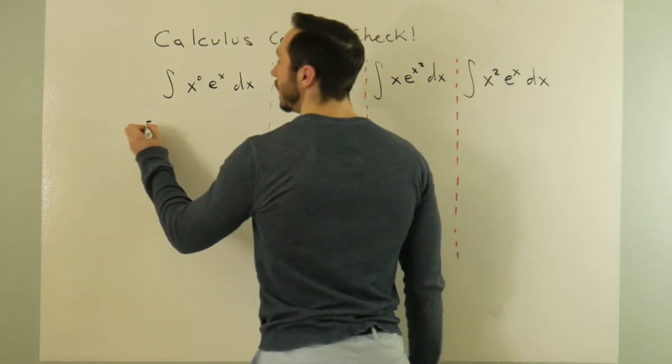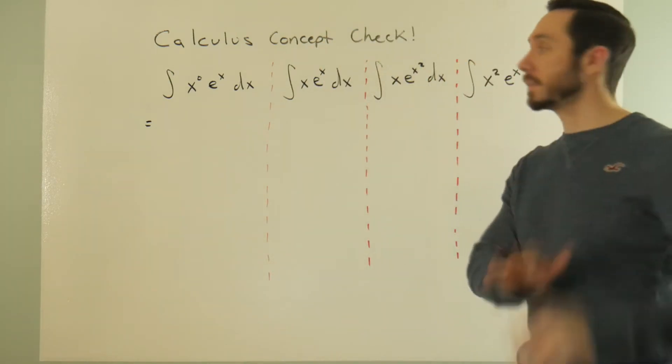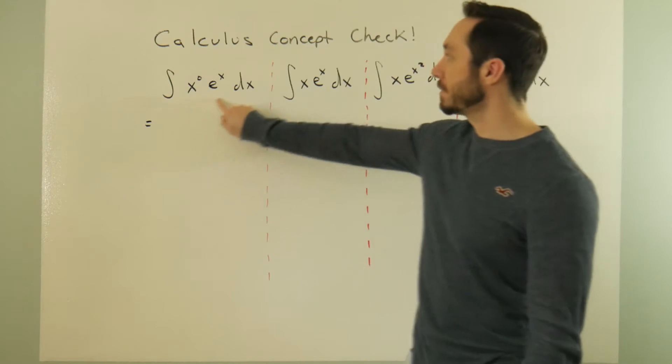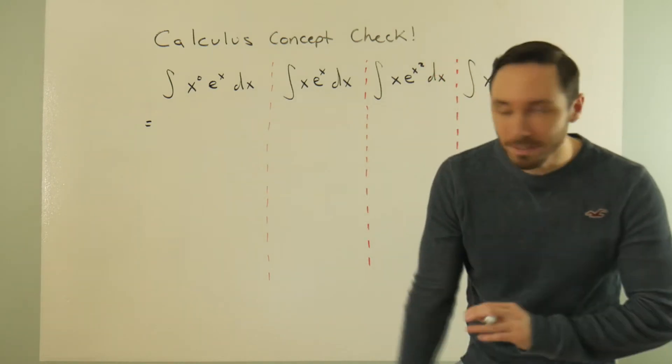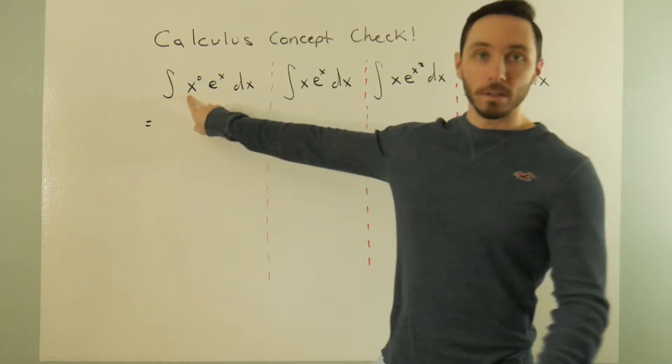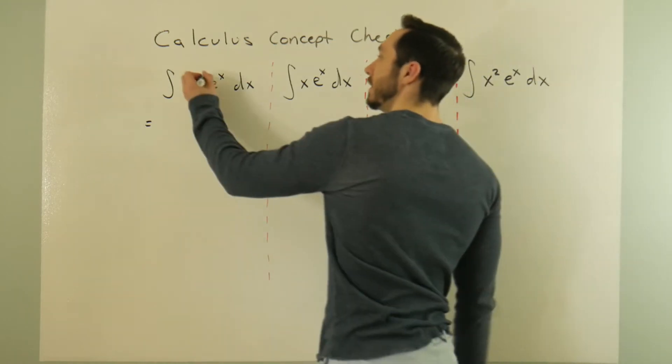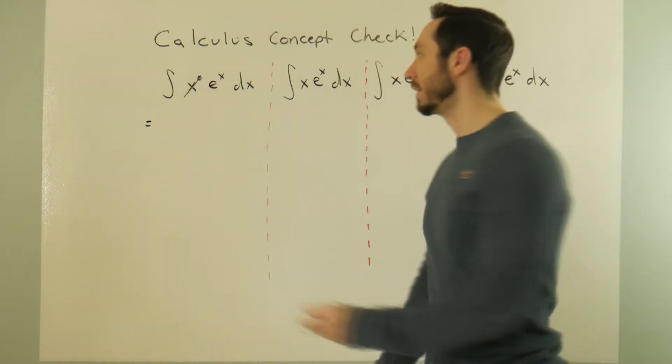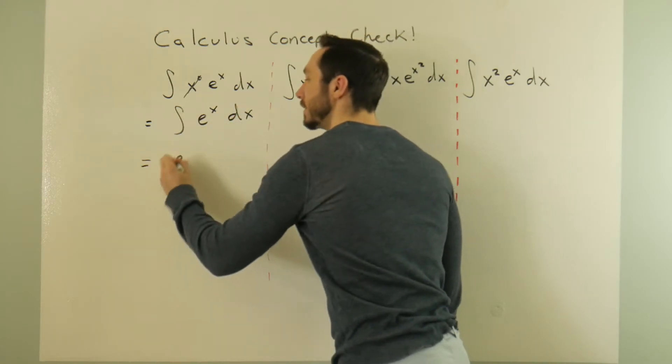I threw this one on here kind of for fun. Know your algebra properties. Sometimes what you have on the inside can be simplified. This is a trivial case, a basic case with normal algebra. I know x to the zero power is just one. This is something I can just ignore.